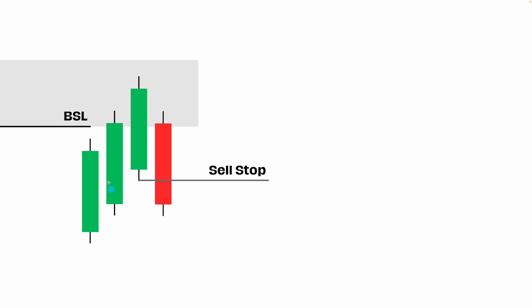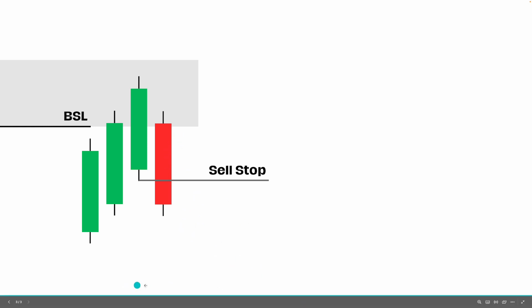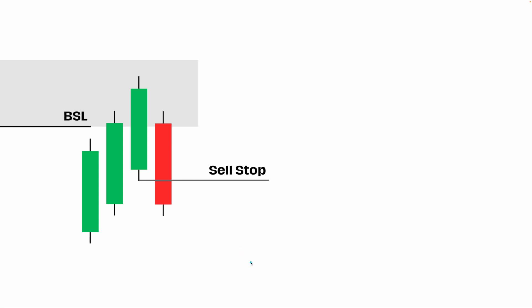The sell stop is the exact same thing but obviously the opposite way around. I would set my order on the low of the wick of the previous candle, assuming the bearish candle is not yet formed. Then as soon as this bearish candle trades through our sell stop, our order is triggered and we would look for price to continue down towards our take profit.